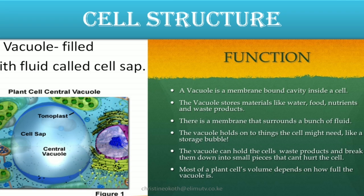The vacuole can hold the cell's waste products and break them down into small pieces that cannot hurt the cell. It holds waste products, breaks them down, and ensures that they do not hurt the cell. Most of the plant cell's volume depends on how full the vacuole is. The main function is to store materials and also break down the waste products found in the cell.